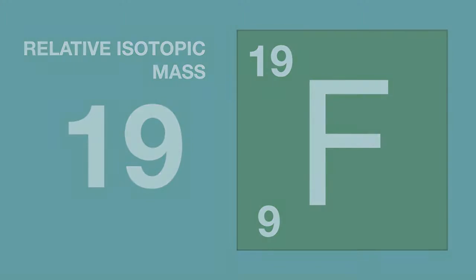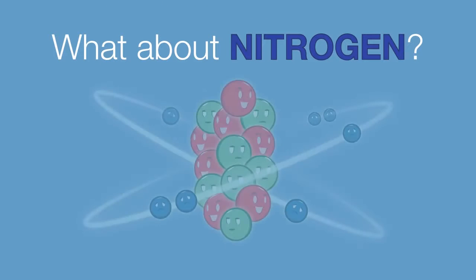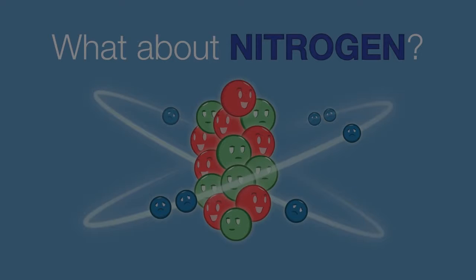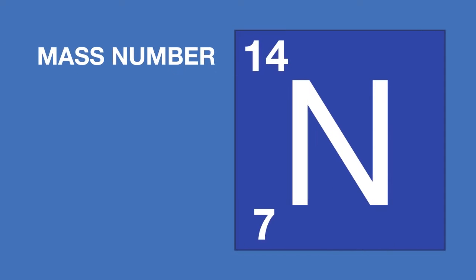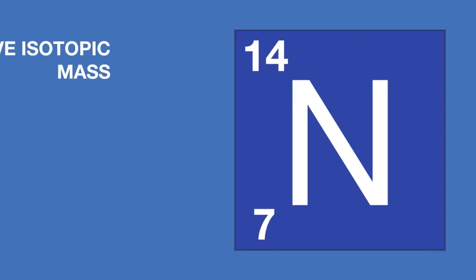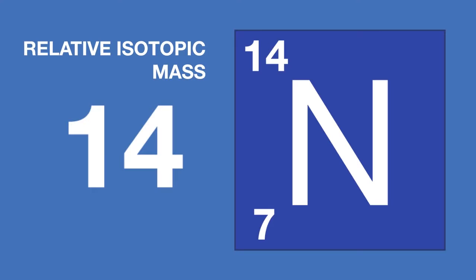Now it's your turn. What about nitrogen? Here's the atom — pause the video while you work it out. All we need to do is look up the mass number for nitrogen. It is 14, which means the relative isotopic mass of the nitrogen atom is 14.